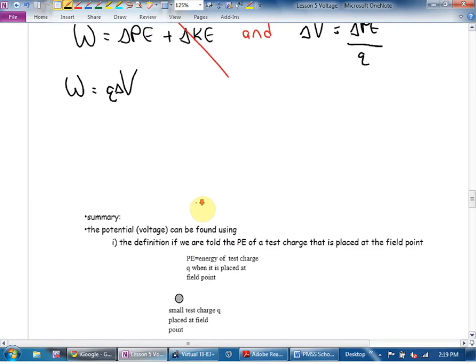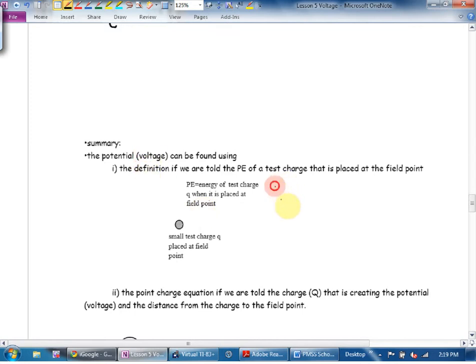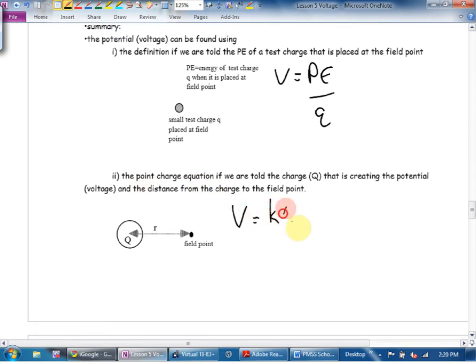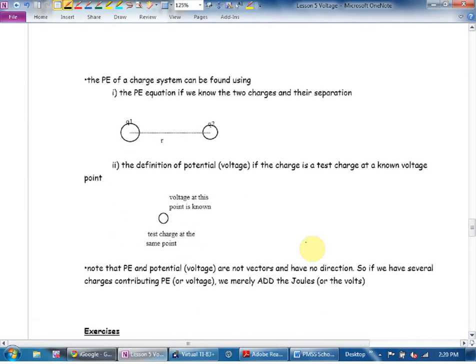Let's summarize. We can find voltage by using the definition. Voltage is energy per Coulomb. Or, we can use the point charge equation. Voltage is KQ over R. And, we can find energy in two ways. We can find potential energy by going KQ1, Q2 over R, if we know both charges and how far they are apart.